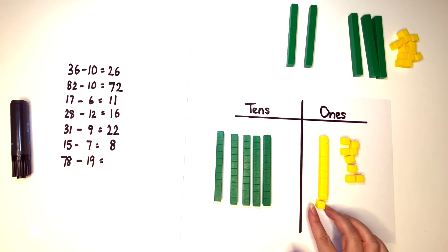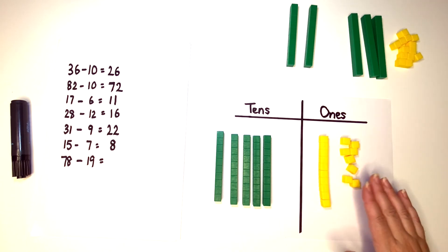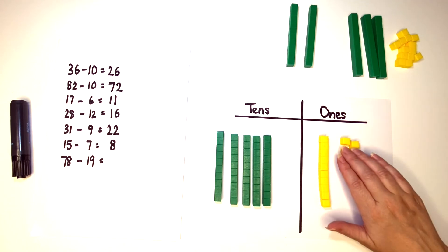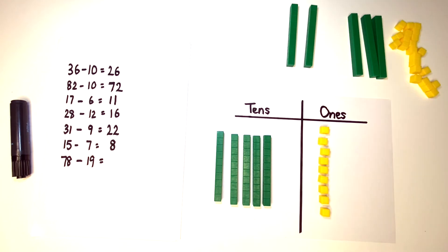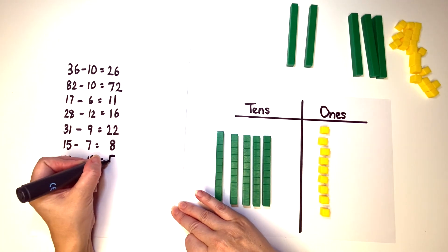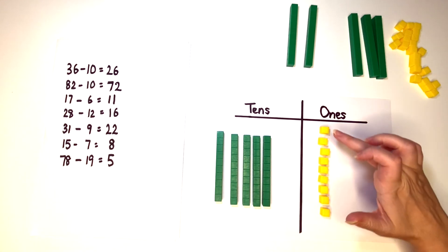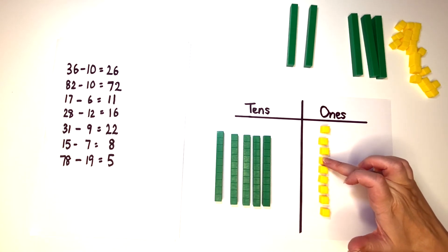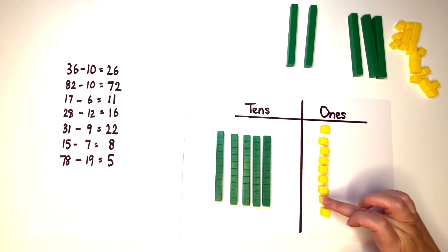So we need to take away our nine. Two, four, six, eight, and one's nine. Let's check the number of tens that we have. One, two, three, four, five. And one, two, three, four, five, six, seven, eight, nine.